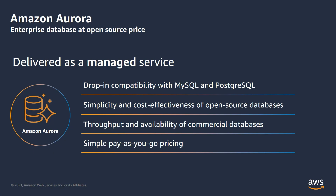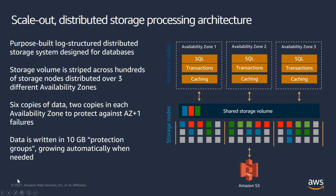Let's take a look at Aurora's shared distributed architecture. Amazon Aurora has a purpose-built log-structured distributed storage subsystem. We have decoupled the storage subsystem from the compute layer, which enables these components to scale independently of each other. The storage volumes are striped across hundreds of storage nodes and distributed across three availability zones. The storage nodes — the boxes in the bottom part of this slide — are machines with high processing power and locally attached SSDs.